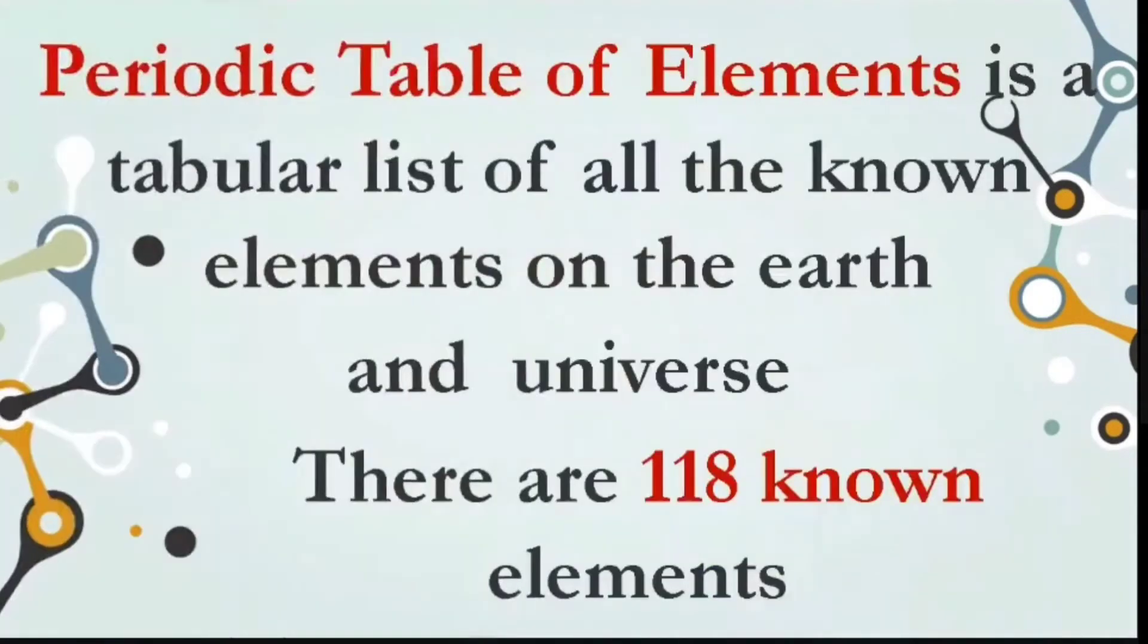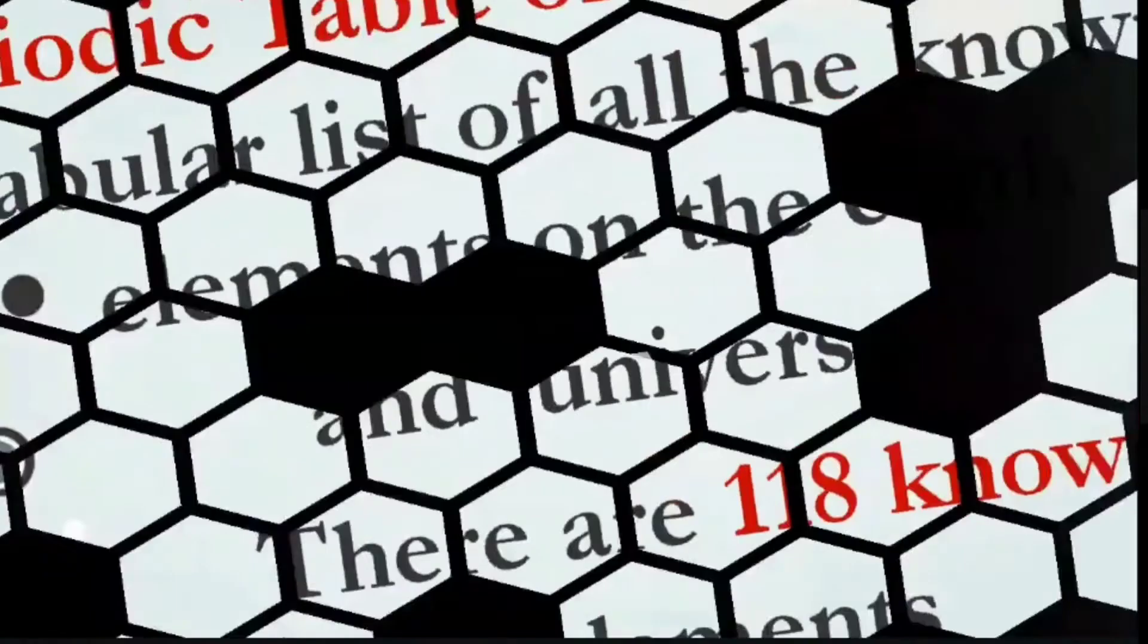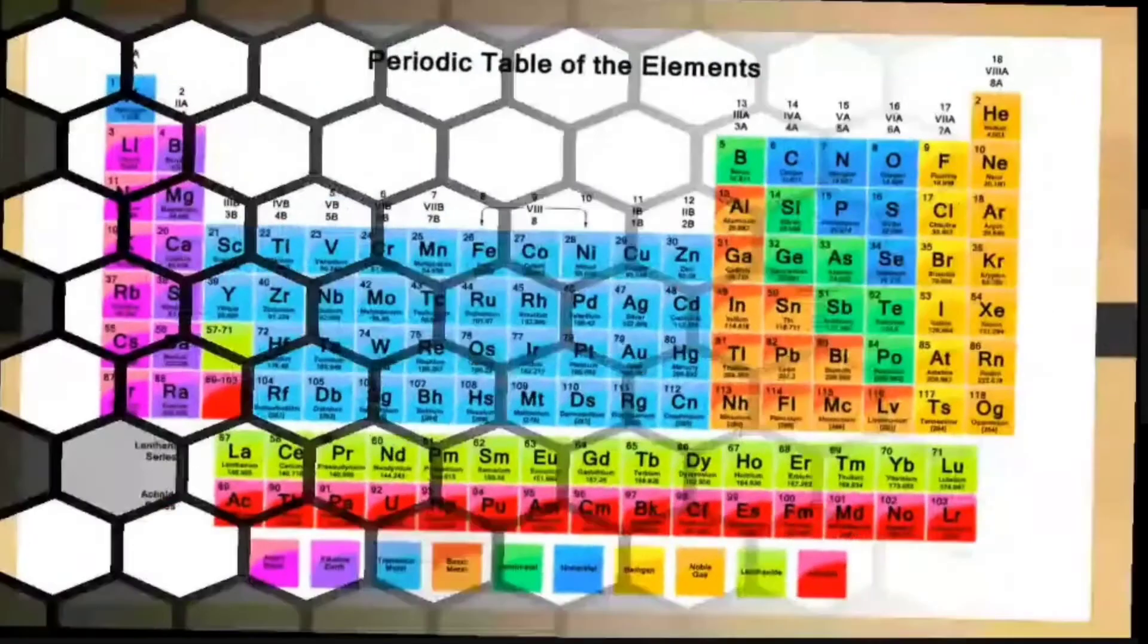Periodic table of elements is a tabular list of all the known elements on the earth and universe. The periodic table of elements is a tool that we can refer to every now and then. The more we use it, the more we get to be familiar with the elements. As of today, there are 118 known elements.